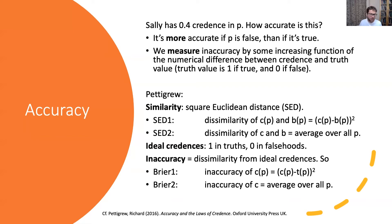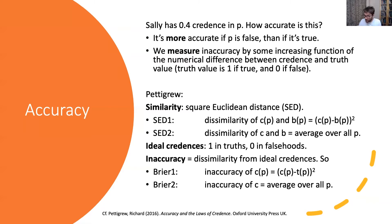Here's Richard Pettigrew's framework from his book Accuracy and Laws of Credence. We have a notion of similarity between credal states, where that's the inverse of dissimilarity, where dissimilarity is given by the squared Euclidean distance — take two credences in a proposition, take their difference and square it. If you want to do that for a whole credence function and have a measure of dissimilarity for that, you average over all the propositions. Ideal credences in a given world will just match the truth values: one in truths, zero in falsehoods. Inaccuracy then is the dissimilarity from the ideal.